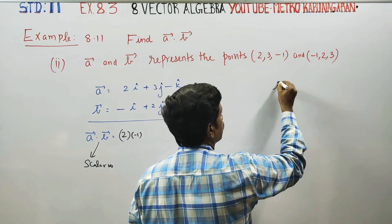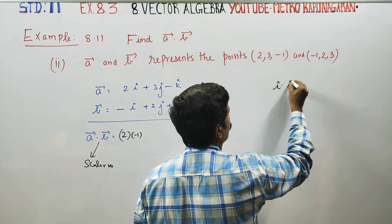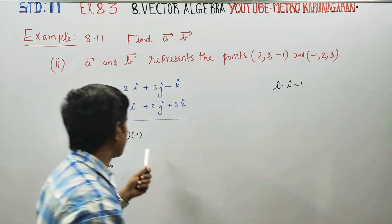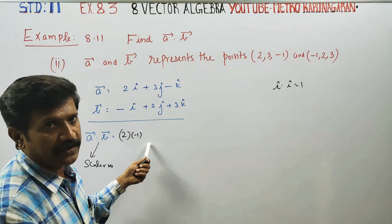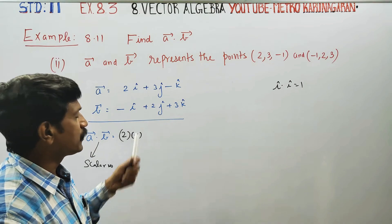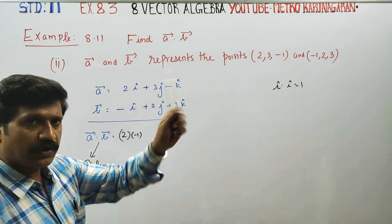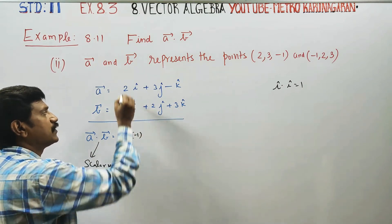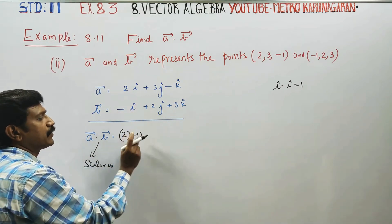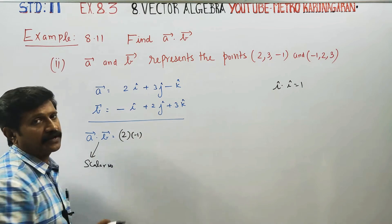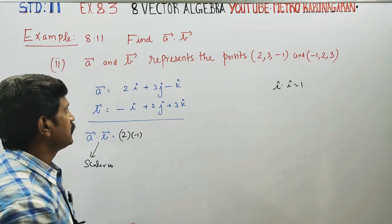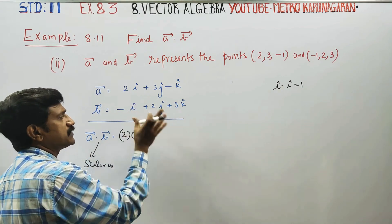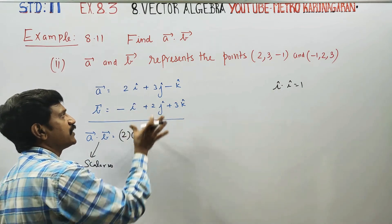The meaning of this is: I dot I is 1. That's why we use it. I dot I is 1.